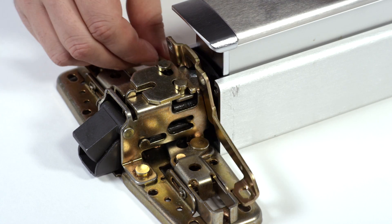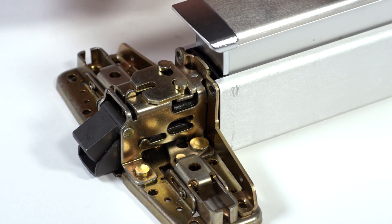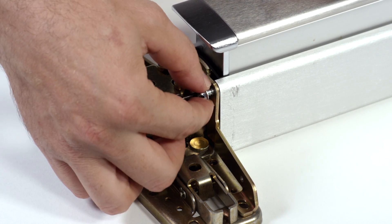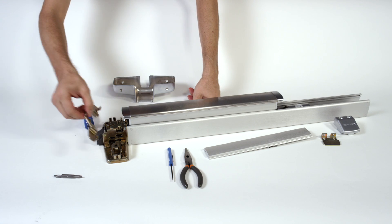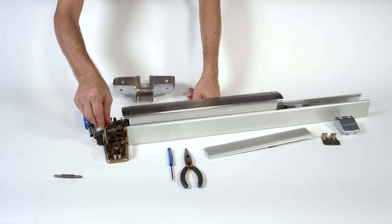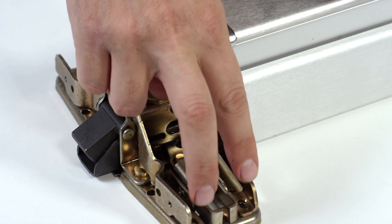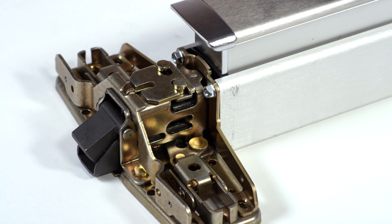Next, install the center case bracket and the two screws attaching it to the case. The second bracket, called the reinforcing bracket, gets installed in the center case as well. They will be held in place by four screws connecting the exit device to the door or outside trim.